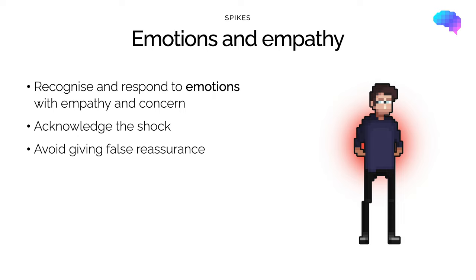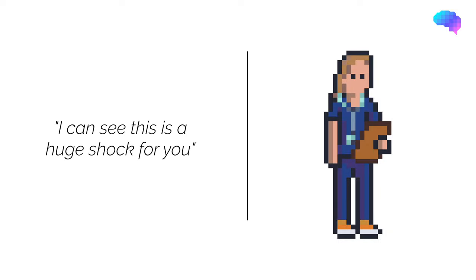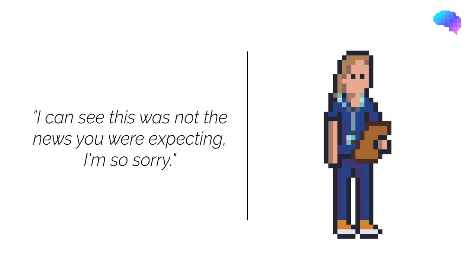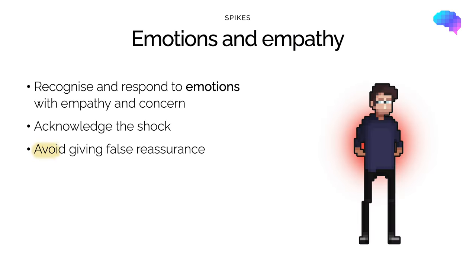So how do we respond to these emotions? This is the next stage in the SPIKES model. We should recognise and respond to the patient's emotions with empathy and concern. Acknowledge their emotions and body language. For example, you could say: 'I can see this is a huge shock for you' or 'I can see this is not the news we were expecting — I'm so sorry.' However, do not give false hope or reassurance when responding to the patient's emotions. It can sometimes be tempting to downplay the severity of the situation or withhold vital information, but this is only going to cause problems in the longer term.